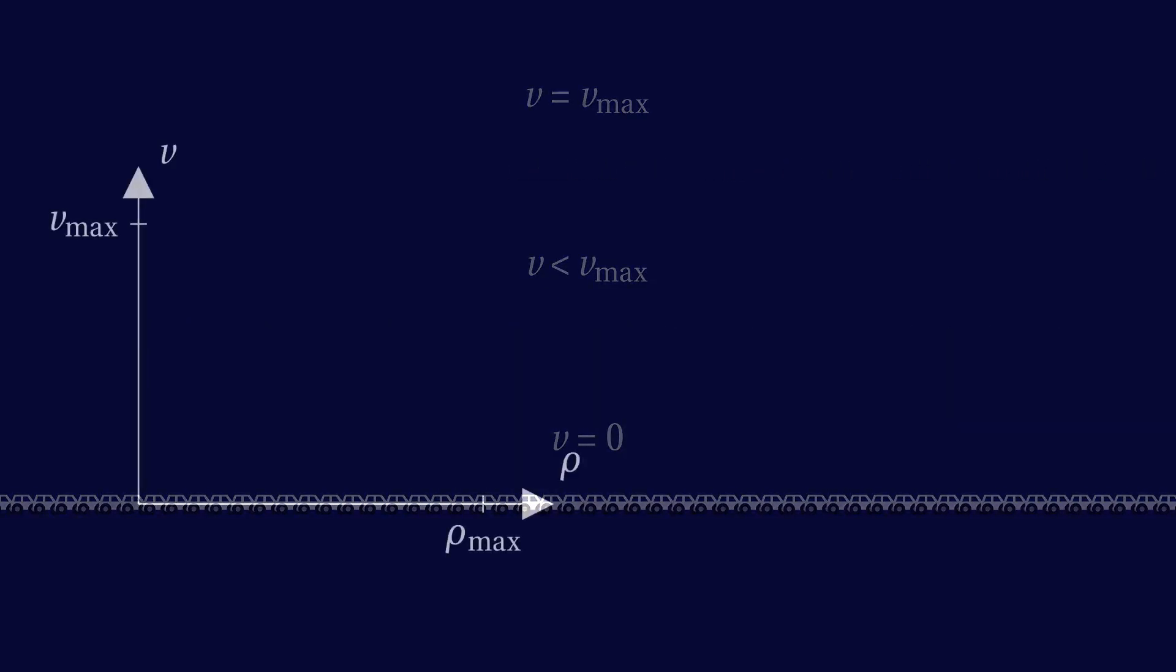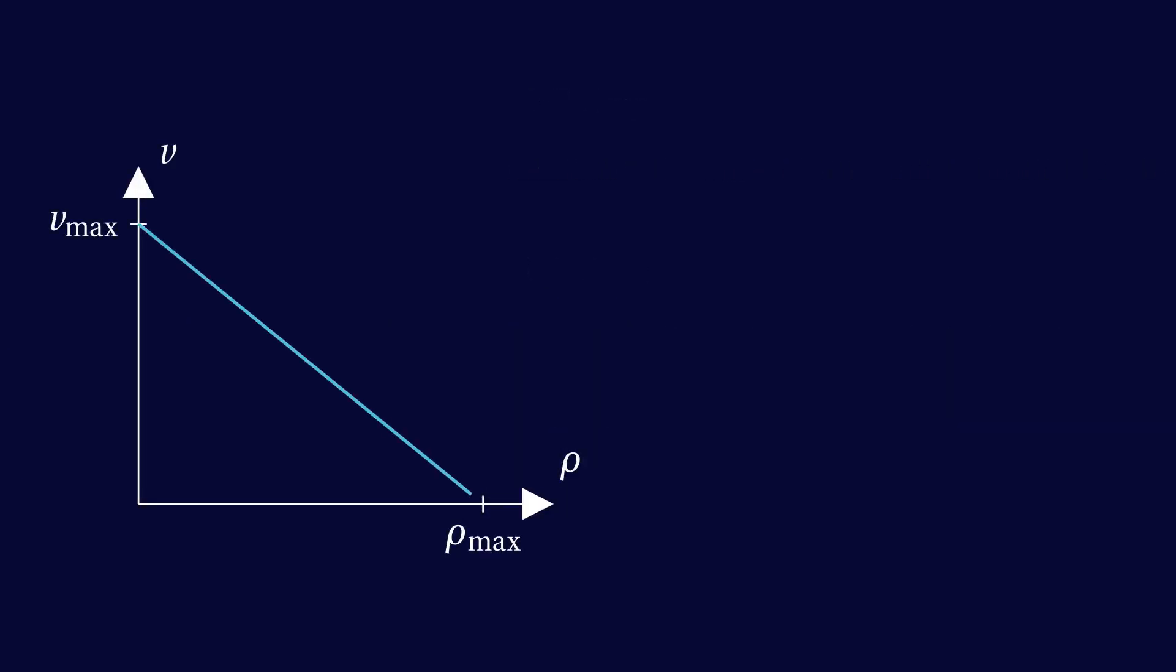So the graph of speed over density may look like this, or like this, or different still. For now, let's take the simplest possible option: a linear relation. The graph is a straight line, connecting a certain maximum speed when the density is zero, to a speed of zero when the density is maximum.